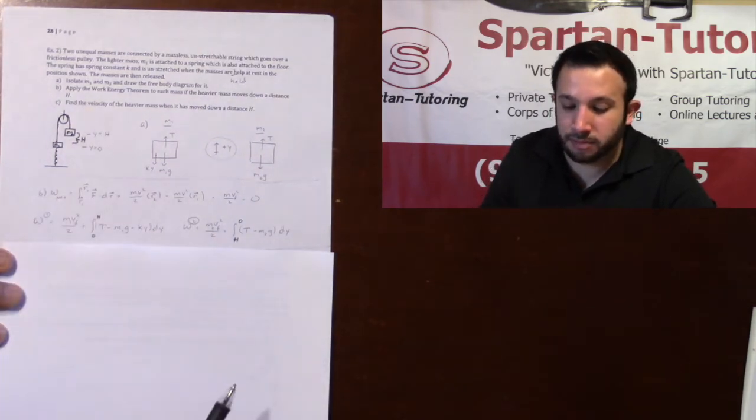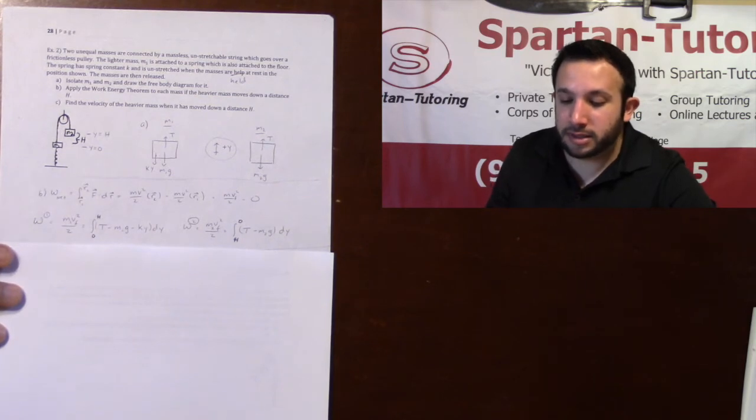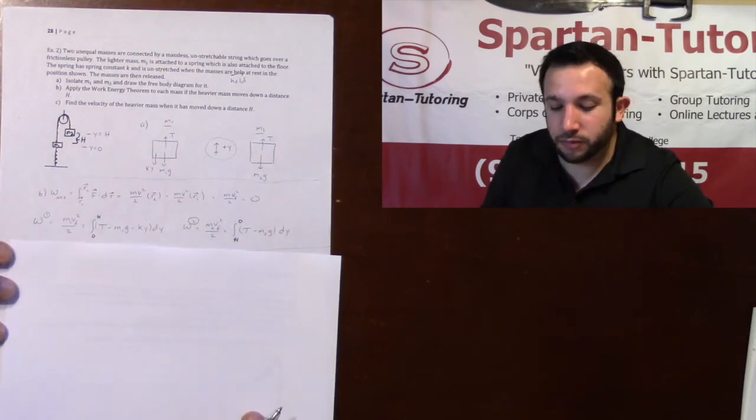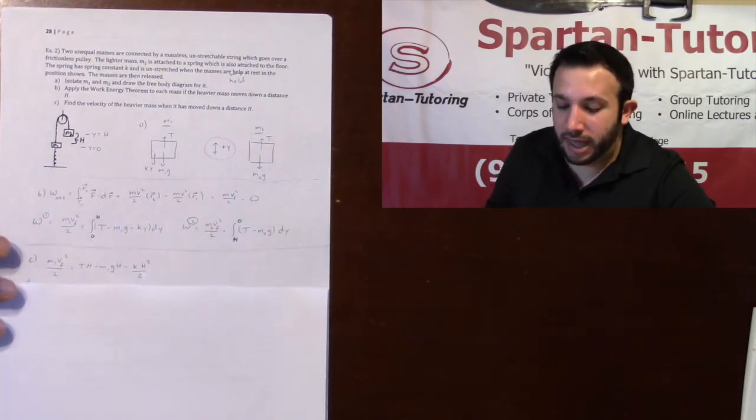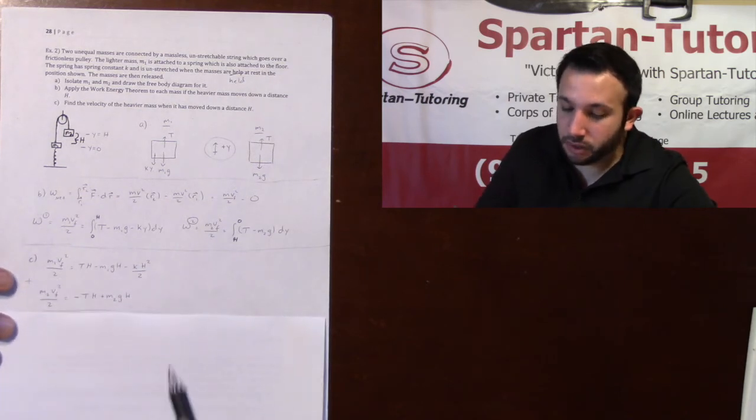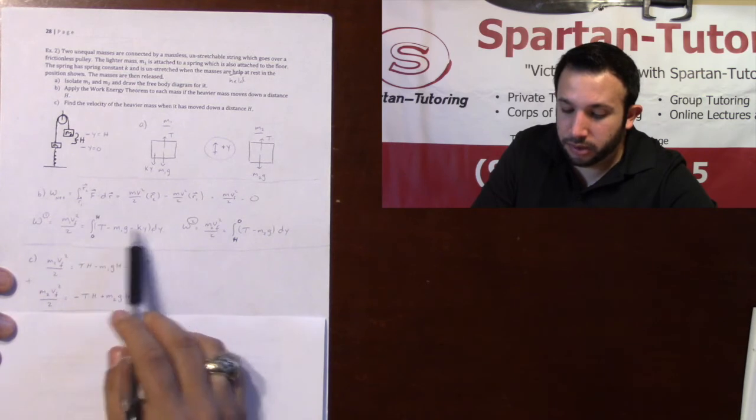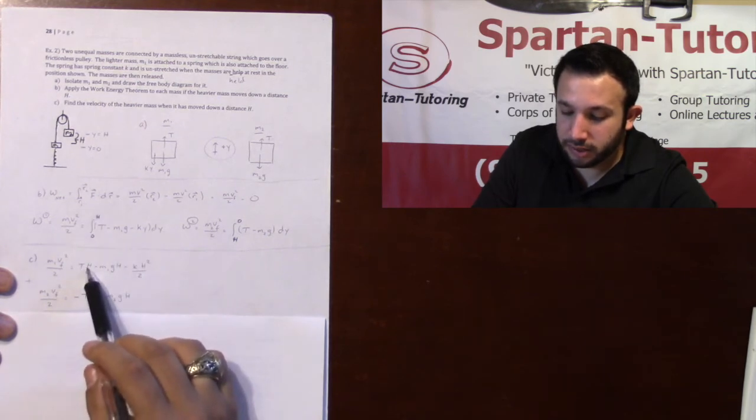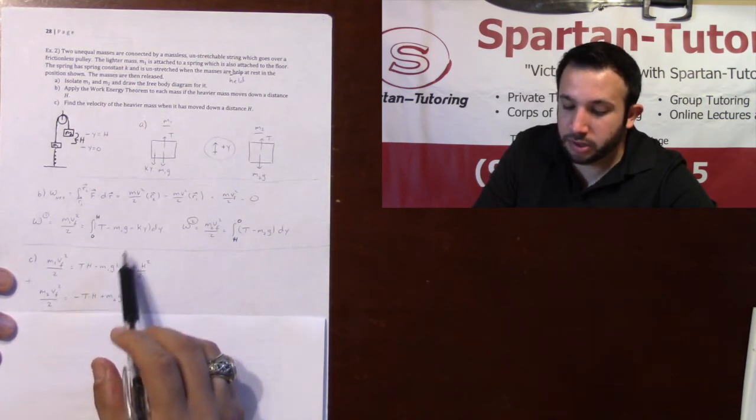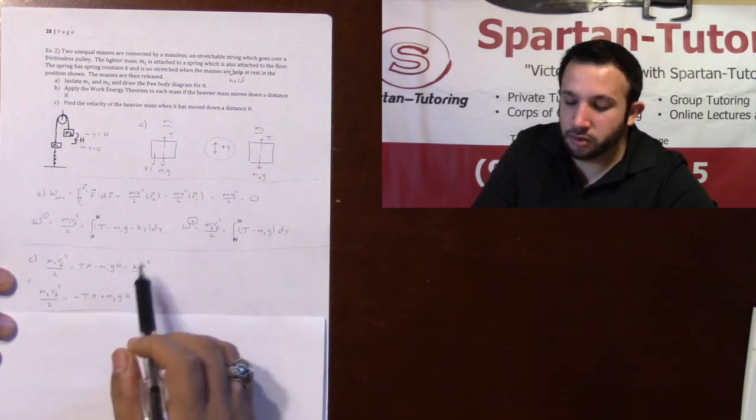In part c, it says find the velocity of that mass after it's moved down. Now we're just solving for it. I integrated block one, which went from zero to h, so I got Th minus m1gh minus k h squared over two.